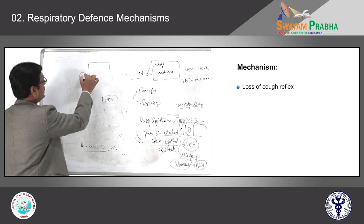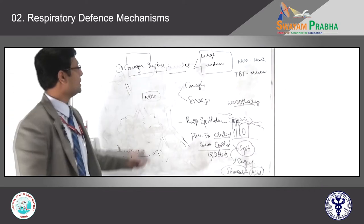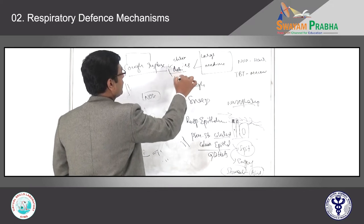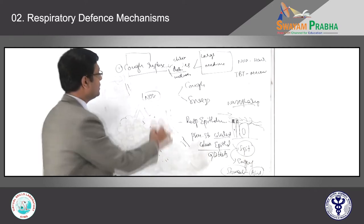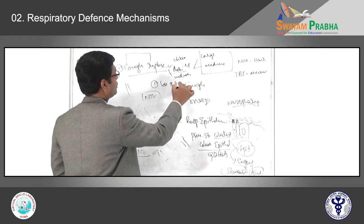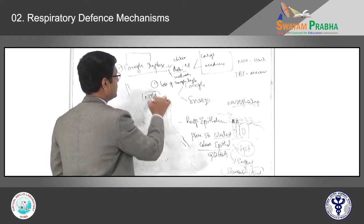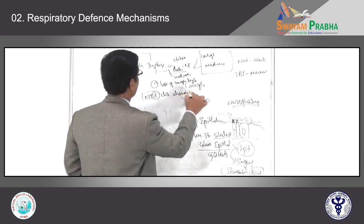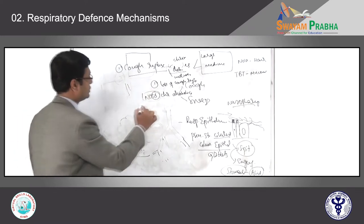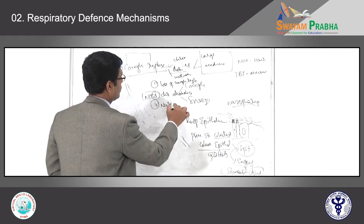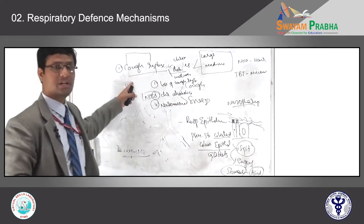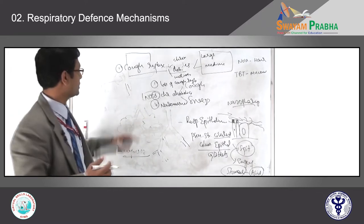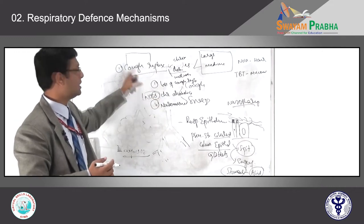Impairment of the cough reflex is usually seen in chronic debilitating individuals, patients who have loss of cough reflex, chronic alcoholics in whom the cough reflex is suppressed, and patients with neuromuscular disorders where the cough reflex is absent or diminished. There will not be proper clearance of dust particles; they start accumulating and finally lead to infection. That is why these individuals are more prone to develop lung infections.